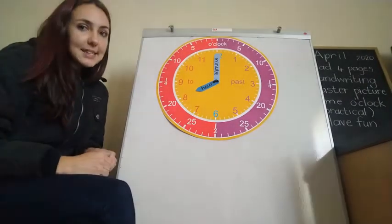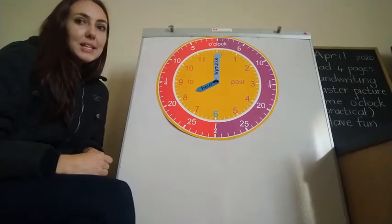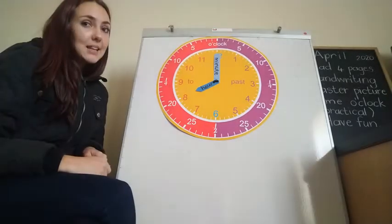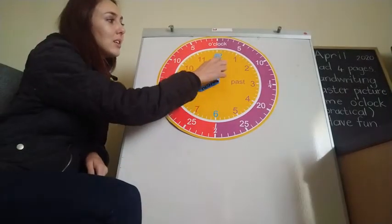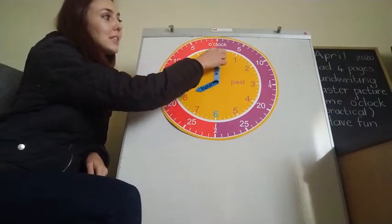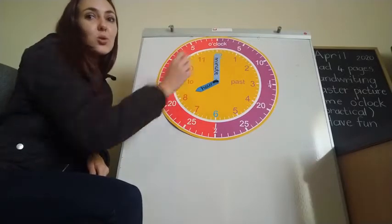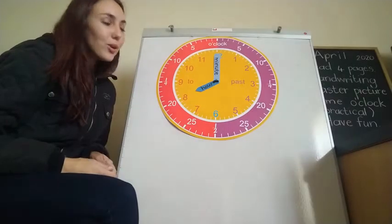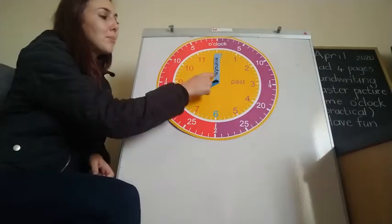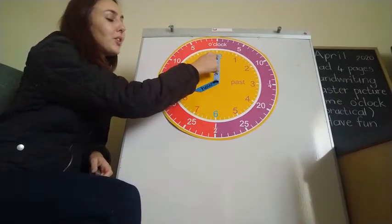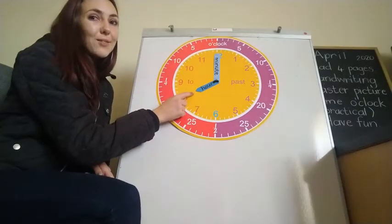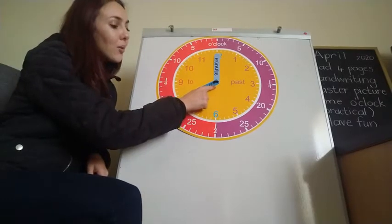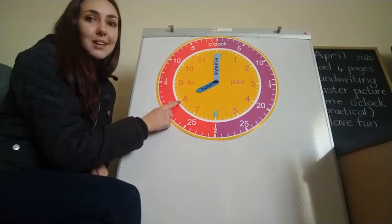So if I say that the time is 8 o'clock, o'clock means that my minute hand is pointing to the 12, which means it's zero minutes — and that's why it's called o'clock, because the 'o' is a zero. So my minute hand will point to the 12 and then my hour hand will point to whatever hour it is. So if it is 8 o'clock, my hour hand will point to the 8.